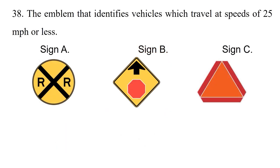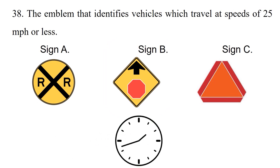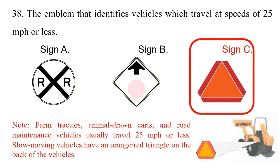Question: The emblem that identifies vehicles which travel at a speed of 25 miles per hour or less. Option 1: Sign A. Option 2: Sign B. Option 3: Sign C. The answer is option 3: Sign C. Farm tractors, animal-drawn carts, and road maintenance vehicles usually travel 25 miles per hour or less. Slow-moving vehicles have an orange or red triangle on the back of the vehicle.